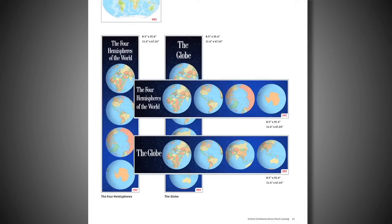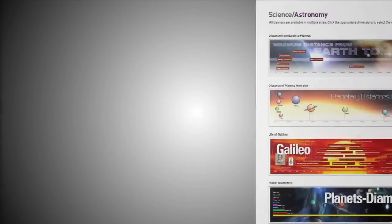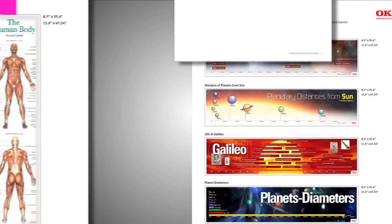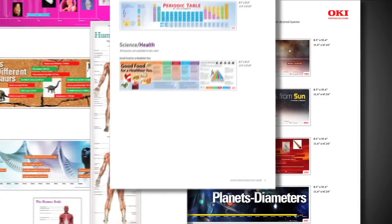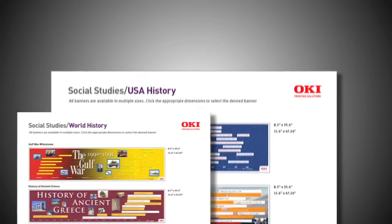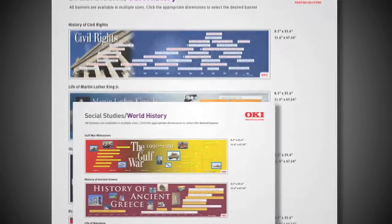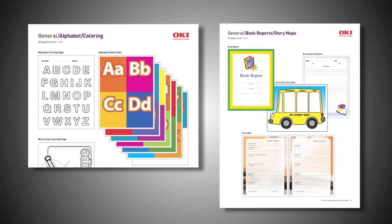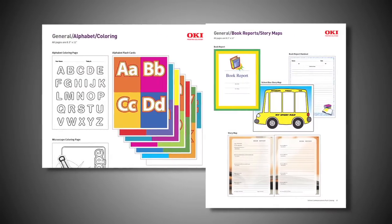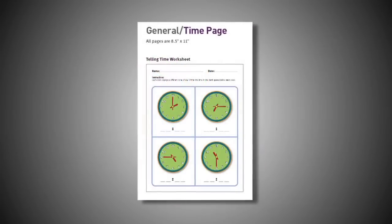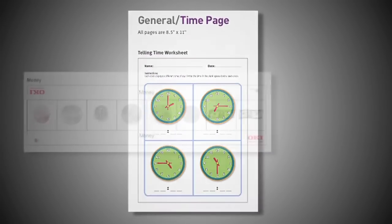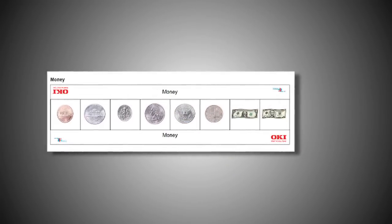Starting with the higher grade levels, we have developed a line of banners that will help in science — specifically astronomy, biology, chemistry, health, industrialization — under social studies: U.S. history, world history. And for general information: alphabet coloring for the lower grades, book reports and story maps, maps in general, telling time for the kindergarten and lower grade levels. We've even put together a banner that will help counting coins, titled Money.